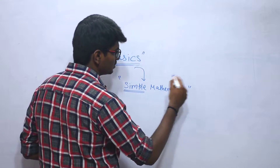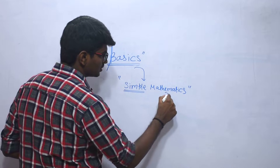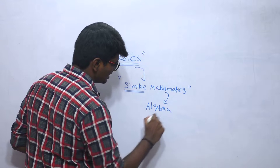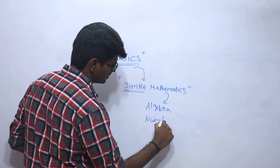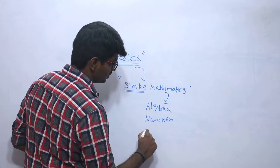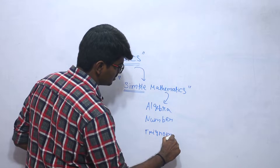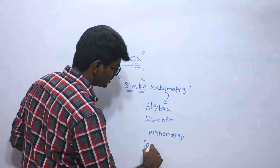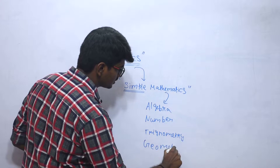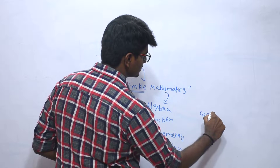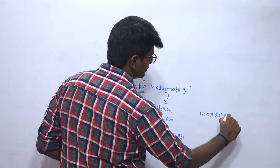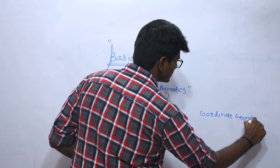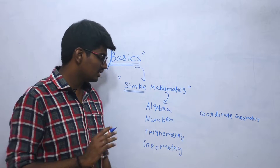The things you might have learned are very simple: algebra, different types of numbers and number systems, and of course the important chapter of trigonometry, which is going to be very useful for GATE as well. Geometry is also going to be useful, and coordinate geometry will be useful in a few cases.